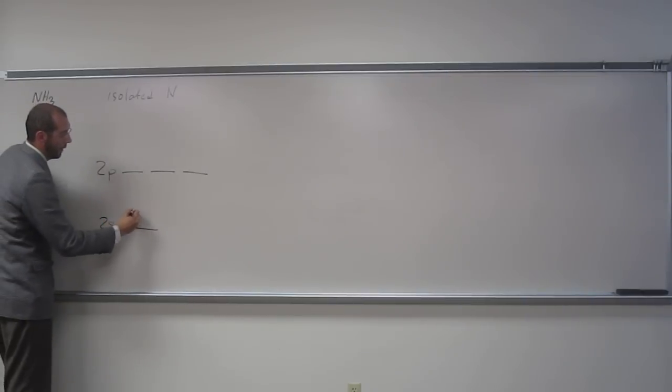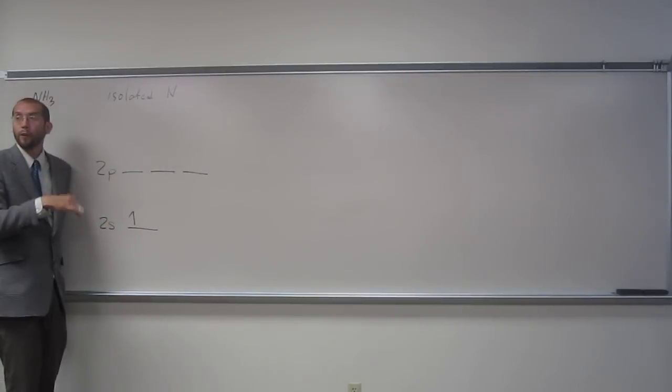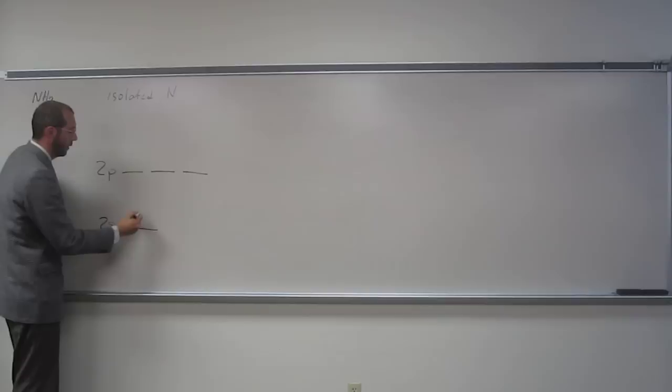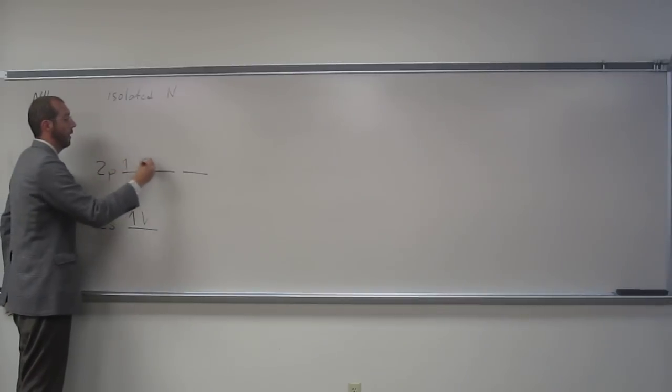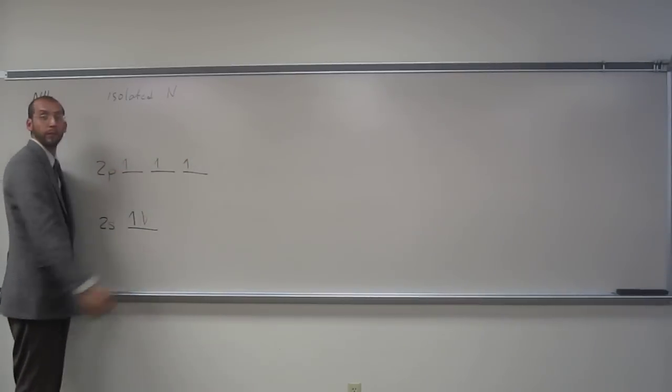So how do we put those in? Remember all our rules, Aufbau, Hund's, Pauli exclusion. One, two, three, four, five.